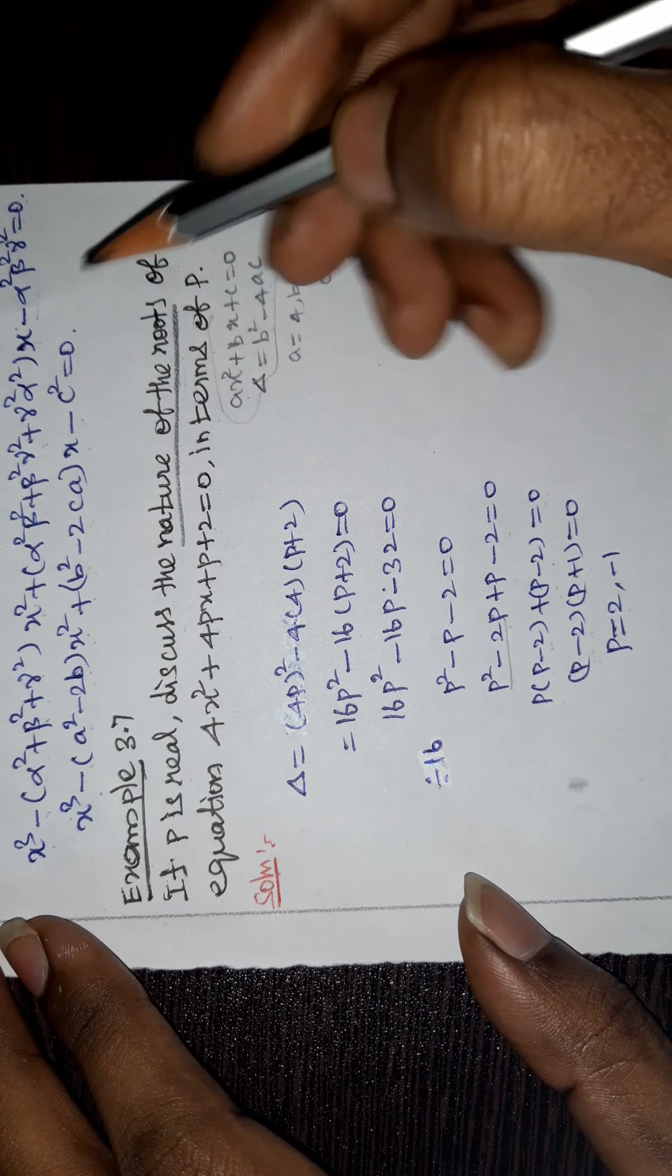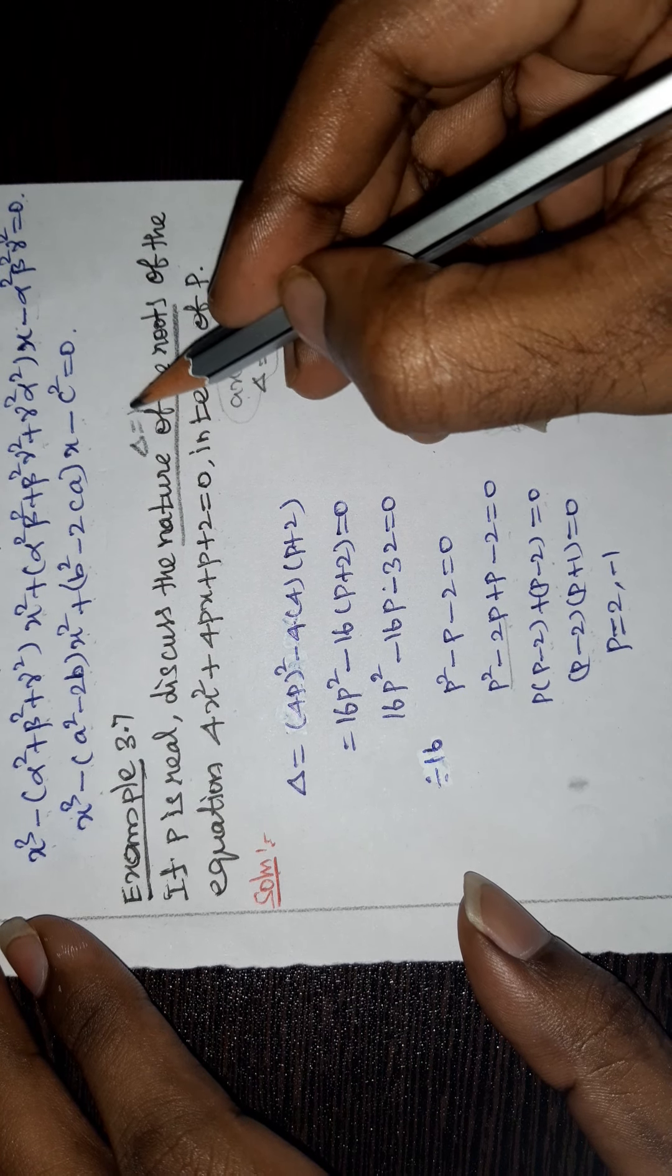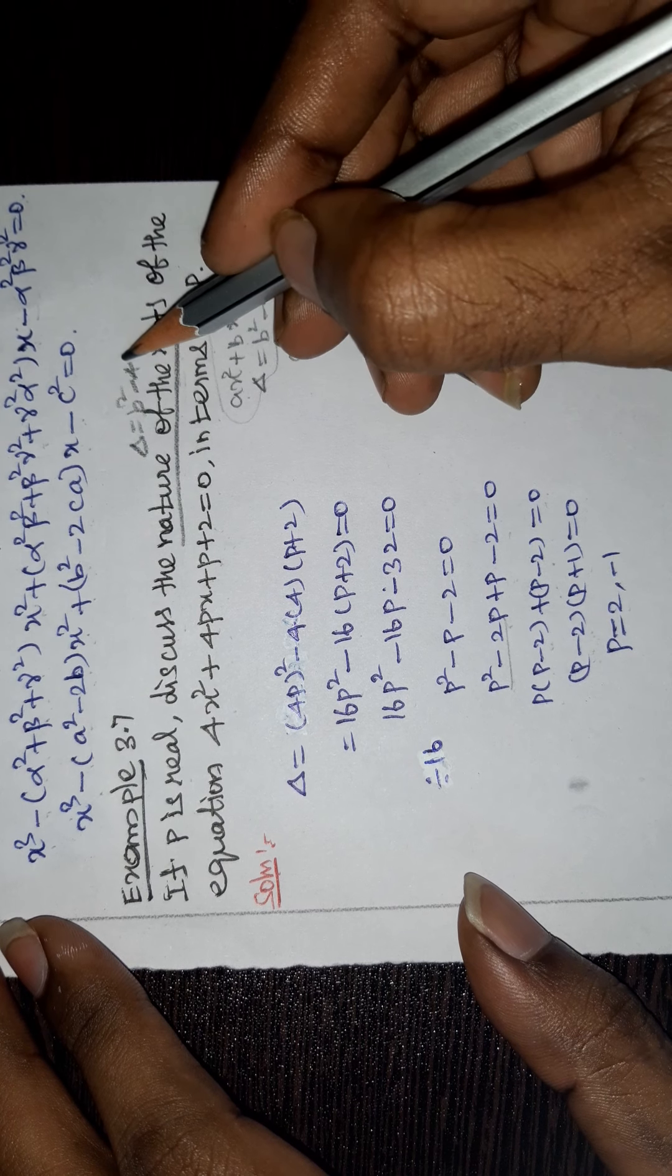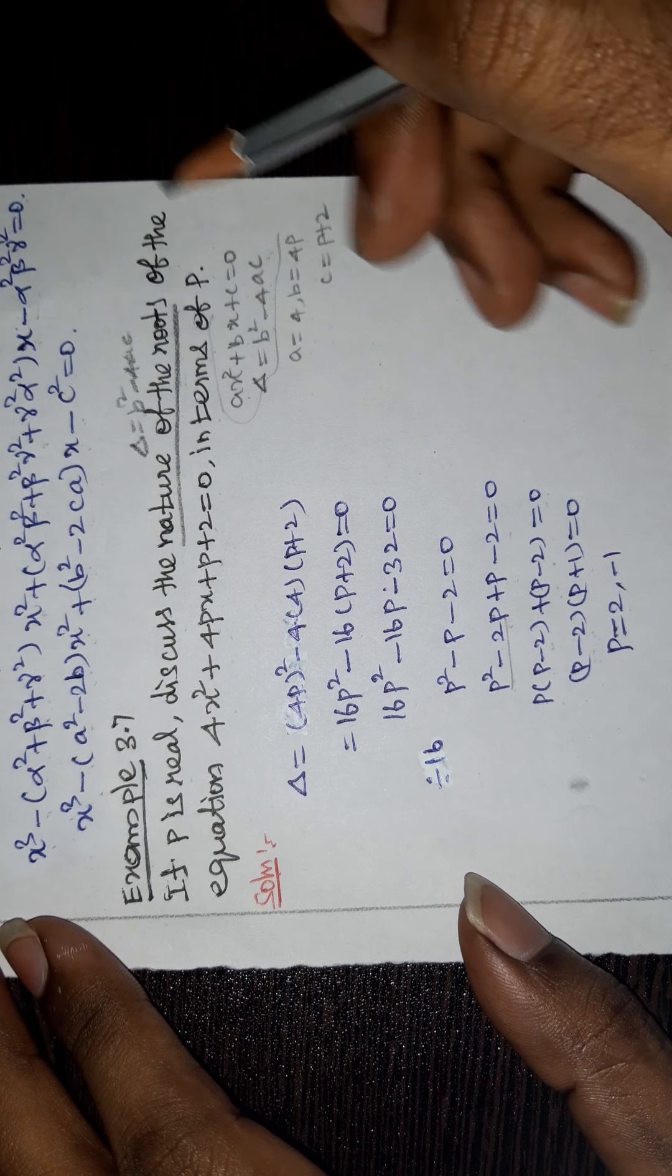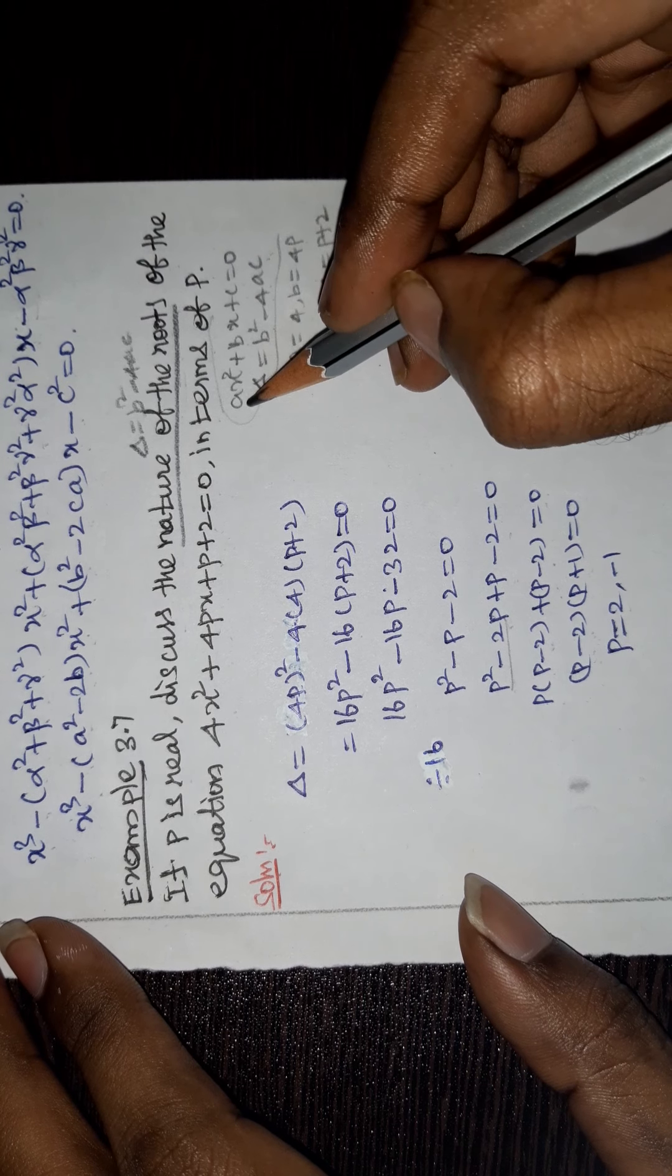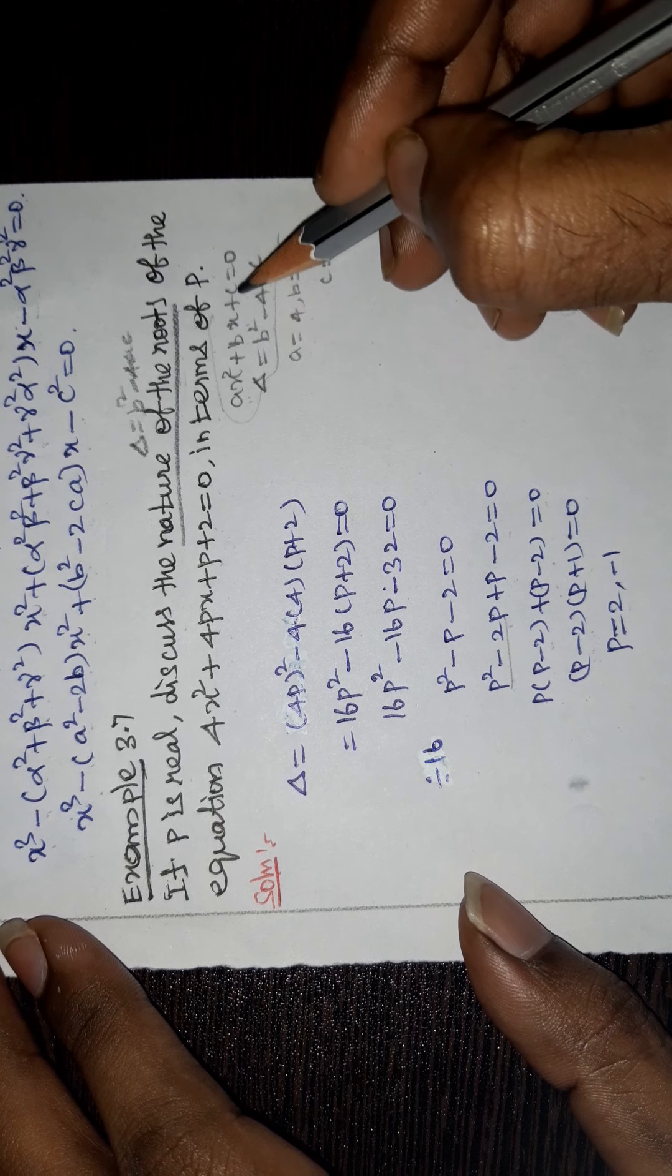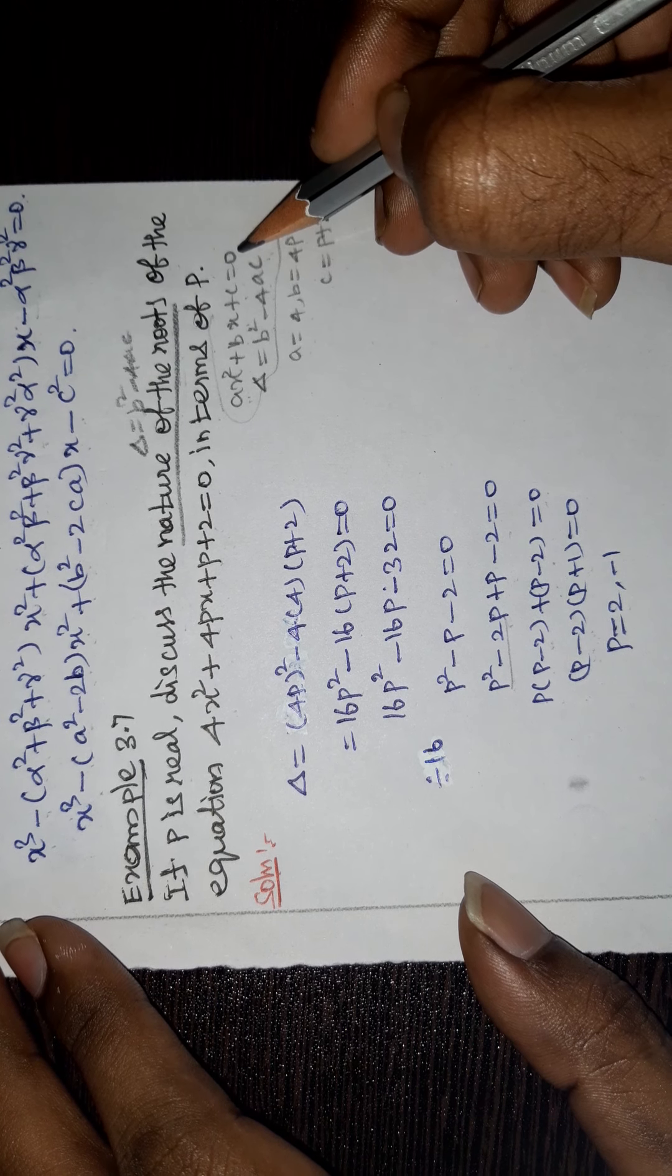Here, nature of root means delta equals b² minus 4ac. We already know the quadratic equation ax² + bx + c = 0.